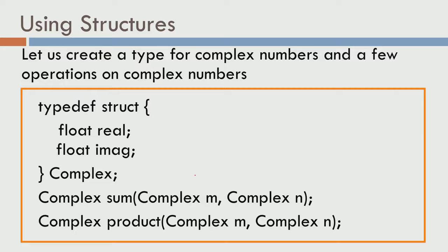In this lecture, we will look at this basic data structure called complex numbers. C does not give you a data type for complex numbers. There are a few languages which give you that, but C does not provide you that. One way to get complex numbers is by faking it.